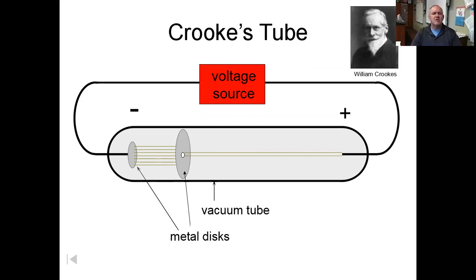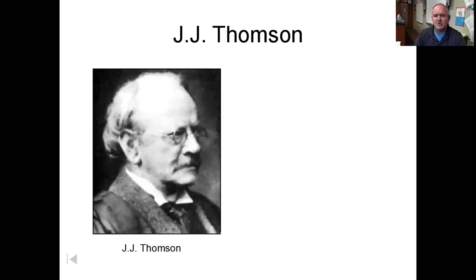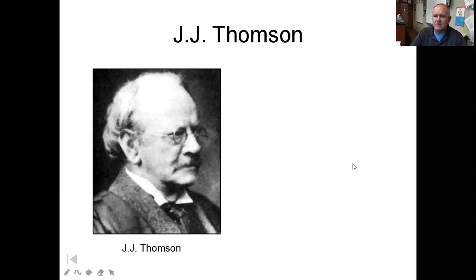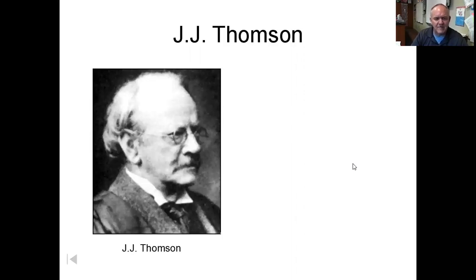You basically have a voltage source sending electrons through a tube, and a magnet will deflect those electrons because they're charged. J.J. Thompson did not create the Crookes tube, but did use it to deduce that there were electrons coming out of atoms — these tiny little charged particles.